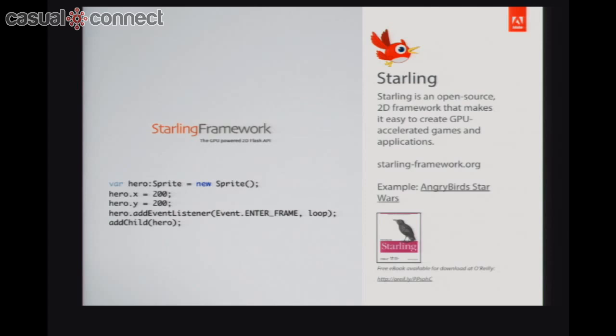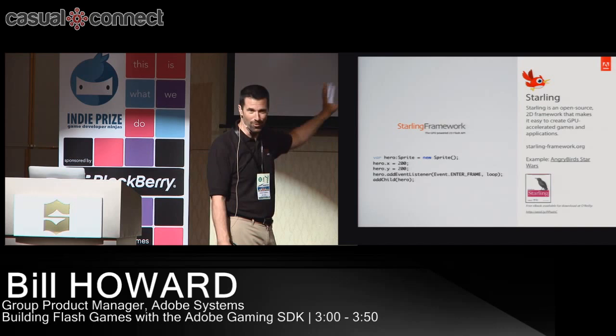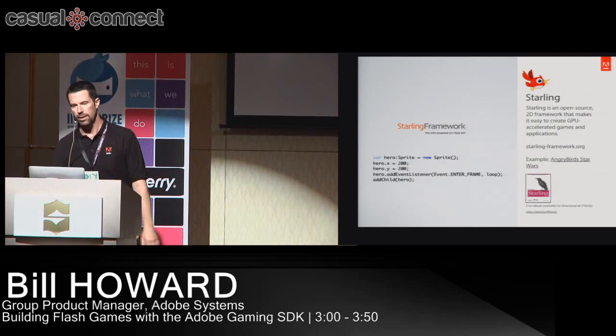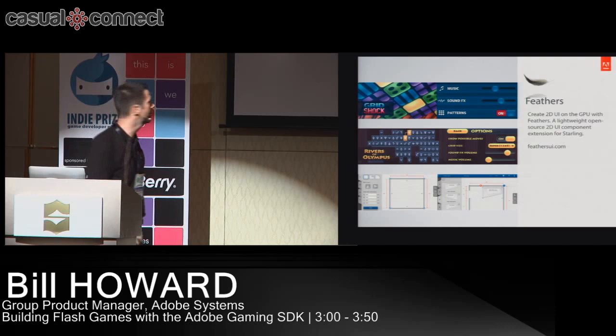Starling is a 2D framework built on top of Stage 3D that looks and feels just like the standard Flash display list — making it easy to build GPU-accelerated content. There's a free book available at O'Reilly that explains exactly how it works, and the Starling framework URL gives you access to open source bits and documentation.